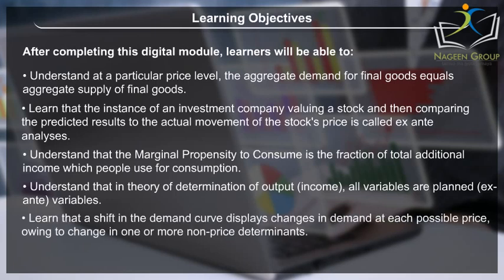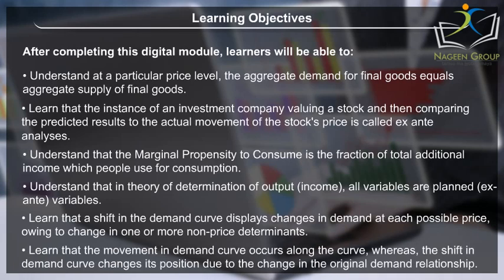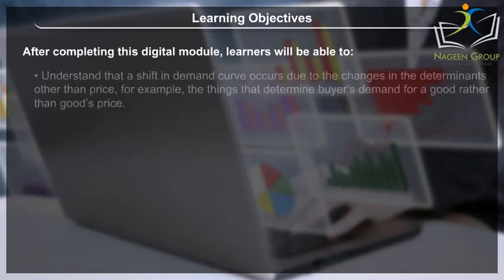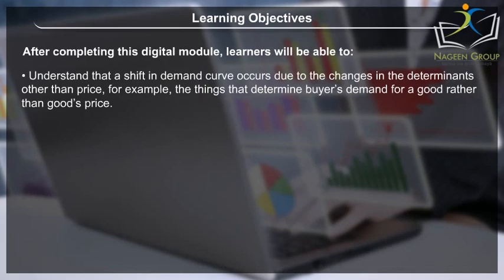Learn that a shift in the demand curve displays changes in demand at each possible price, owing to change in one or more non-price determinants. Learn that the movement in demand curve occurs along the curve, whereas the shift in demand curve changes its position due to the change in the original demand relationship. Understand that a shift in demand curve occurs due to changes in determinants other than price, for example, the things that determine buyers' demand for a good.